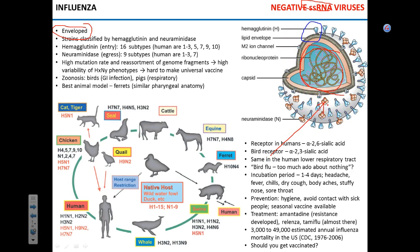The function of hemagglutinin is to bind to the virus receptor and facilitate entry — so this one is the receptor binding. The function of neuraminidase is to facilitate viral entry and mainly the release of virus from the cell. When influenza virus leaves the cell, before it can detach from the cell membrane, it gets stuck — attached like Velcro — because hemagglutinin keeps interacting with the receptor. So neuraminidase cleaves the receptor and releases the virus so it can go infect others.